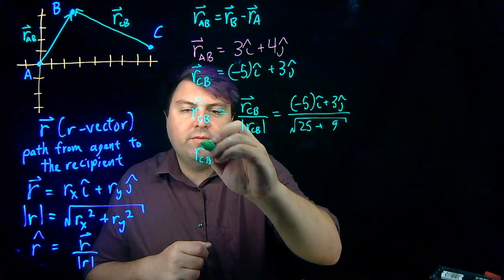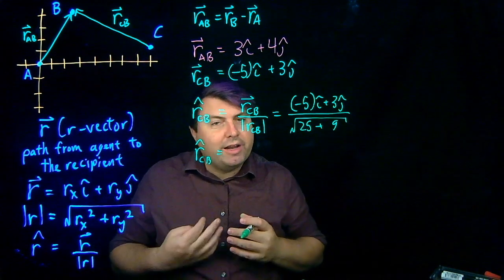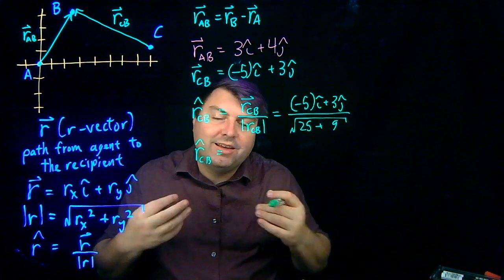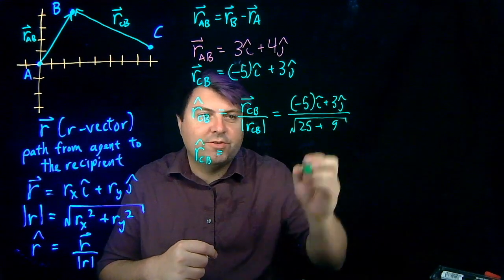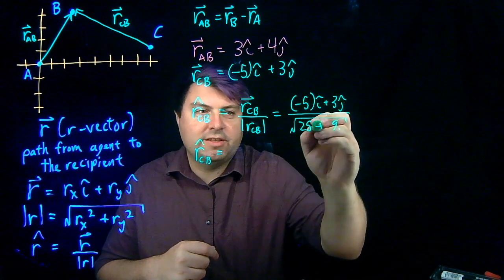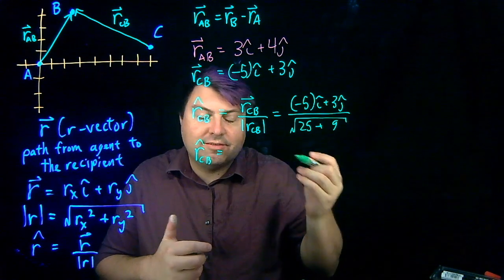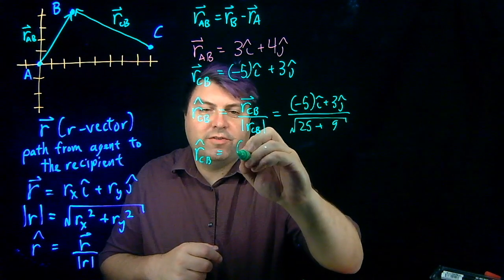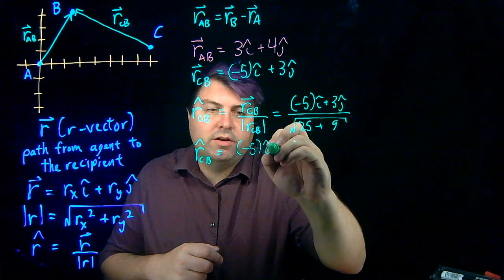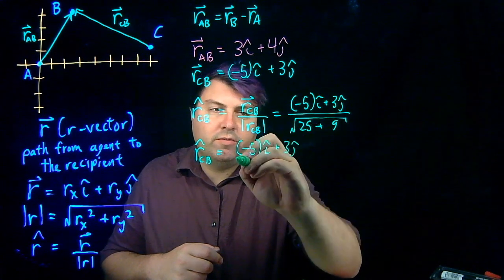And very often when we're doing these r-hats, we're going to have something that looks a little bit ugly, isn't really reducible by very much. The only thing we can really do to simplify this is just to combine the square root of 25 plus 9, and we just get square root of 34. Nothing else we can do. Don't worry about it, we'll be just fine.